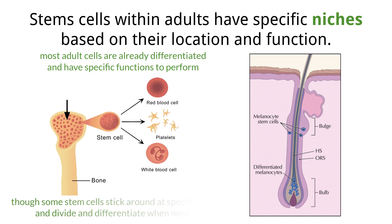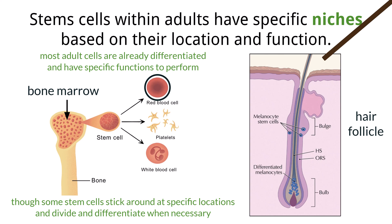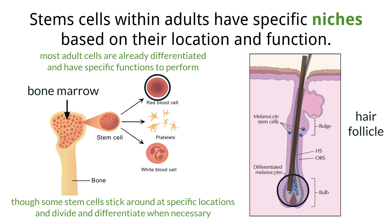But we do still have stem cells that stick around the body and divide when needed. A few examples are stem cells in our bone marrow and within hair follicles. Your body is constantly using and losing red blood cells, and when your blood cell count drops, it needs to be replenished by more red blood cells. Stem cells within your bone marrow will divide to create more red blood cells to circulate around the body. Similarly, if you pull out some of your hair, stem cells can repair the follicle, which will in turn continue to produce more hair.